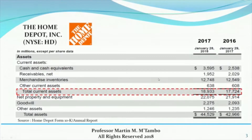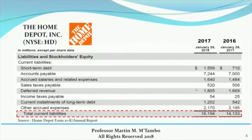Home Depot is a $100 billion company. In 2017, Home Depot's revenue was about $100 billion, and in 2016 it was about $94 billion. These are huge companies doing very well. On the liability side, I only captured the current liability section. The numbers we'll be using are: for 2017, $16,194,000,000, and for 2016, $14,133,000,000.